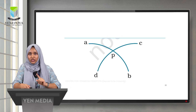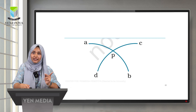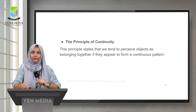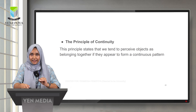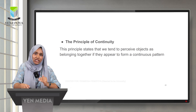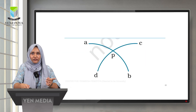As you can see in this picture, we perceive A-to-B and C-to-D as connected lines, not A-to-D or C-to-B, because we see A-to-B as a continuous line. This principle is called the principle of continuity, which states that we tend to perceive objects as belonging together if they appear to form a continuous pattern.